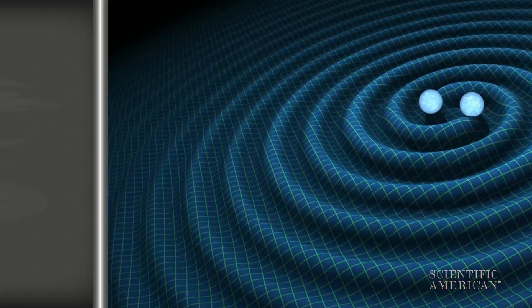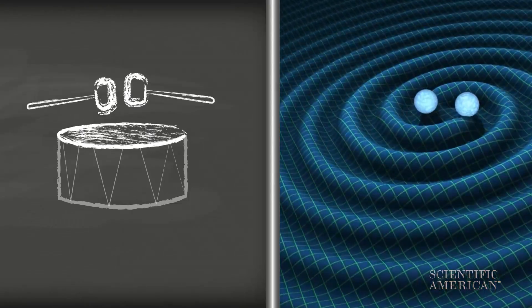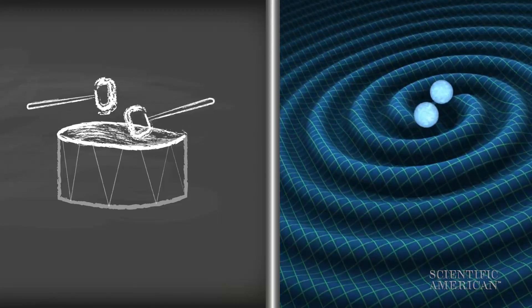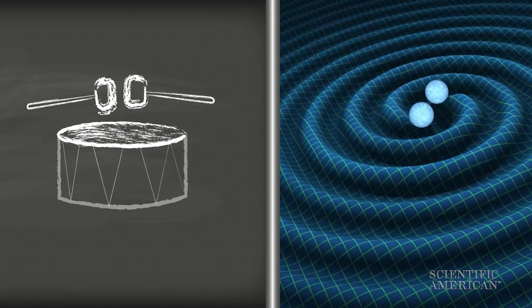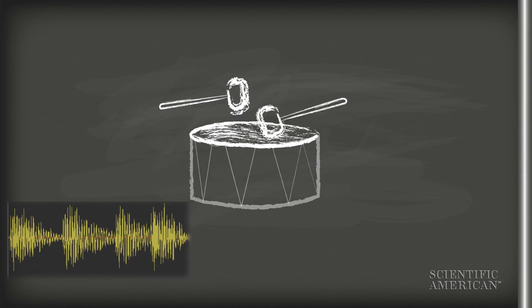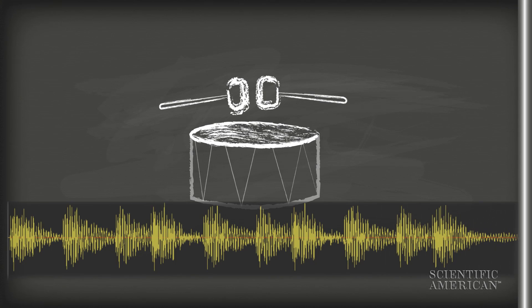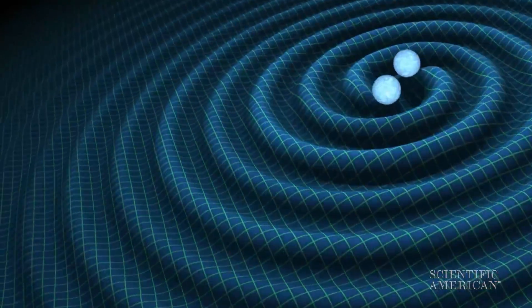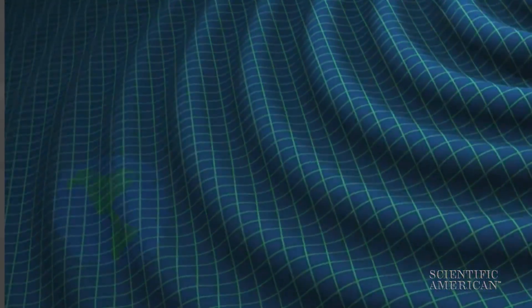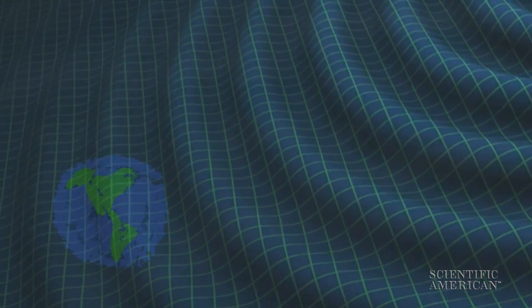So let's say you have two black holes colliding. They're like mallets on a drum. The shape of the drum begins to rumble in response to the motion of those mallets, and it creates effectively like a sound. If you recorded the shape of a ringing drum, you would play that back as sound. And that ringing of the shape of space-time travels through the universe at the speed of light, basically unimpeded, until it washes over the Earth.